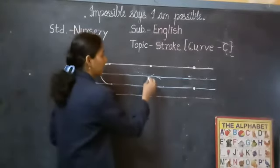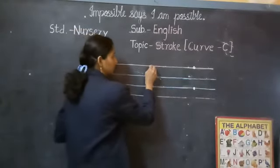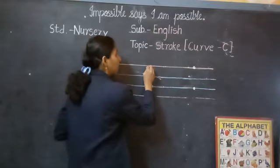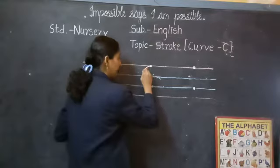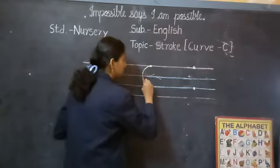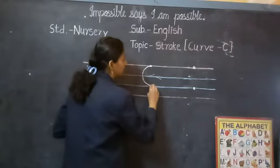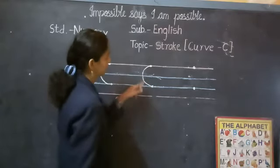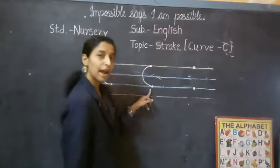Look here one more time. Put your pencil on red line dot and write curve. Join these two dots. This is your write curve.